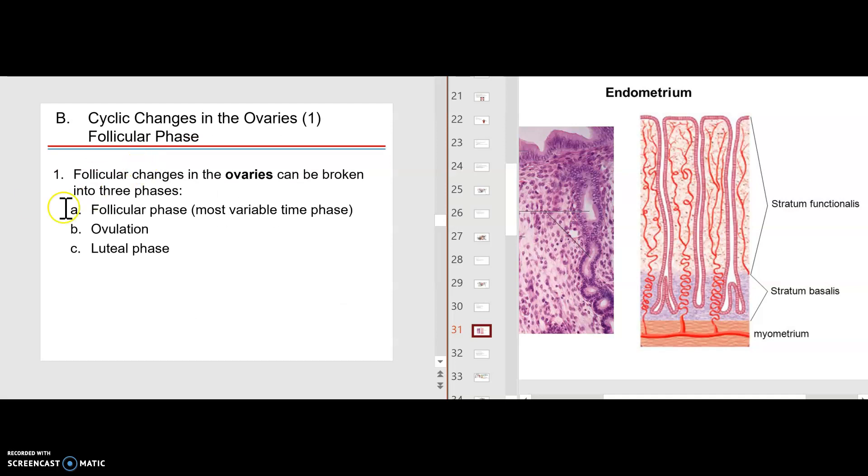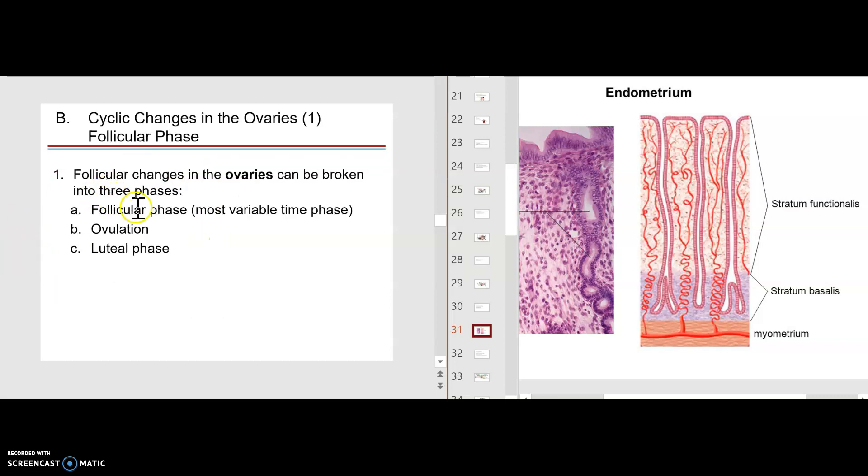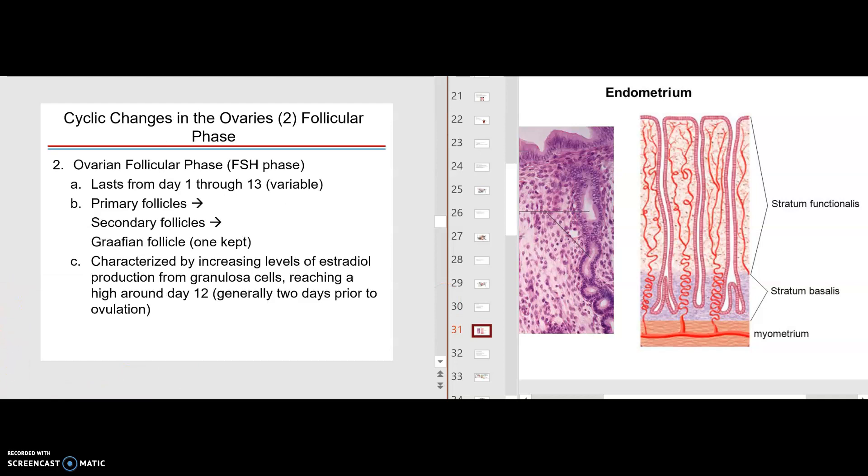In the ovaries, which control the whole thing, there's the follicular phase. That's mainly an FSH deal. And the follicular phase is the one that causes this to get thick, FSH. Then ovulation occurs. Egg is gone in metaphase 2. And then the luteal phase here, which is mainly an LH type of deal, will cause glycogen to accumulate to give the fertilized egg nourishment if it does become the zygote.